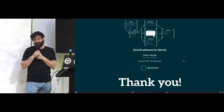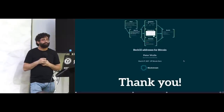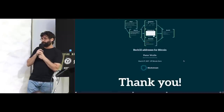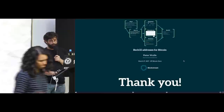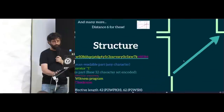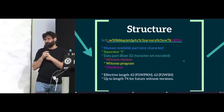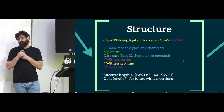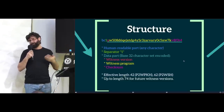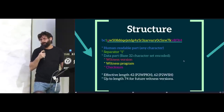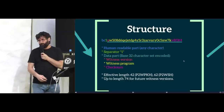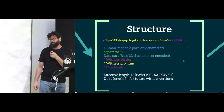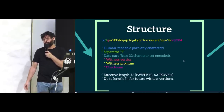Question: does RIPEMD-160 still come into play? Yes — pay-to-witness-pubkey-hash addresses still contain a RIPEMD-160 hash of the public key. That is part of the segwit proposal and doesn't directly relate to this address type, which abstracts over any data. For witness-pubkey-hash it's RIPEMD-160; for script hash it's just SHA-256.